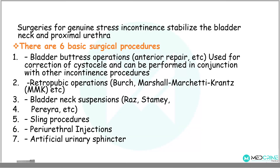Surgeries are used for genuine stress incontinence to stabilize the bladder neck and support the urethra. There are six basic surgical procedures: bladder buttress operations, retropubic operations, bladder neck suspension, sling procedures, periurethral injections, and artificial urinary sphincter procedures.